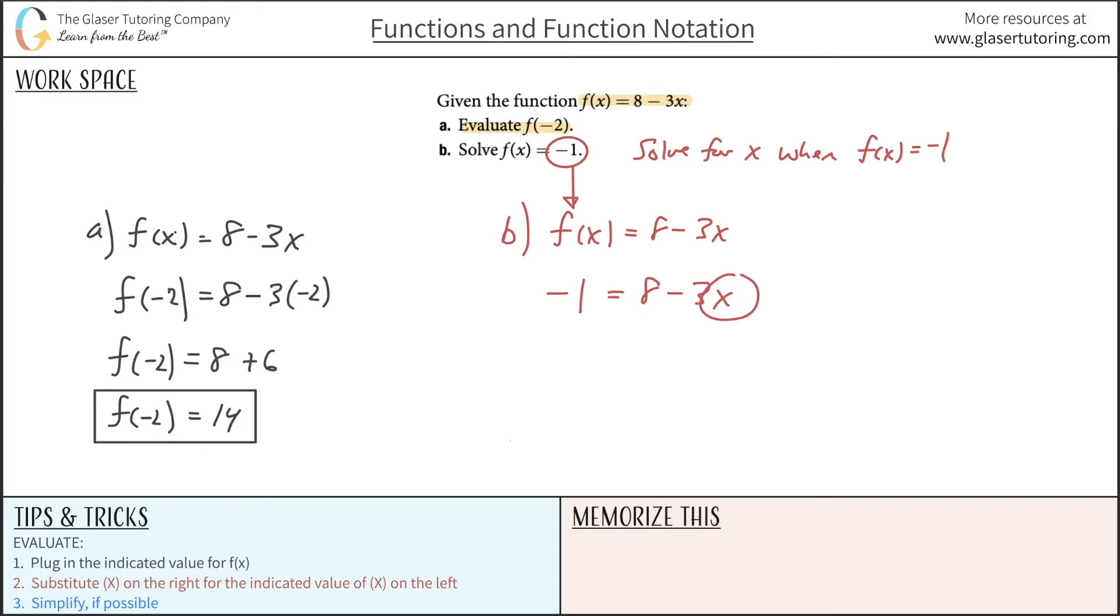If I were to write now the right-hand side, this is 8 minus 3x, what am I solving for? I'm solving for the x. So that's how I can reinterpret this statement B.